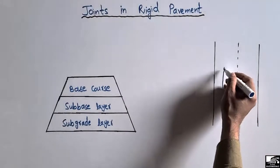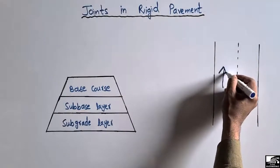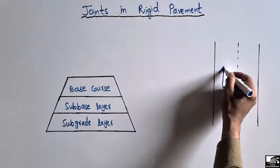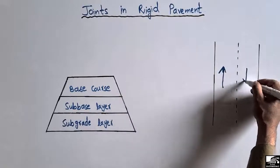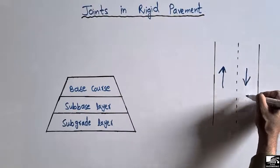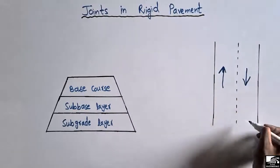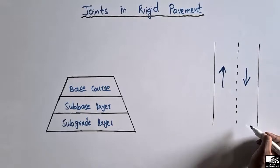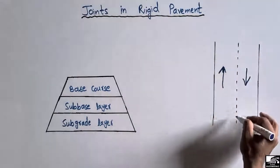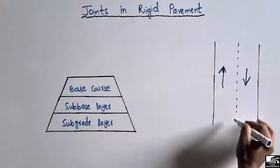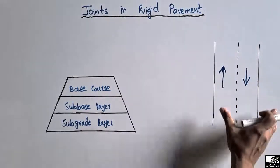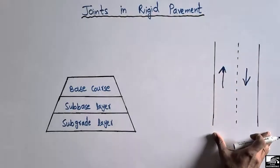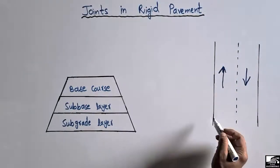Traffic moves in both directions — on one side the traffic moves in one direction while on the other side the traffic moves in the other direction. This is the center line of the road, and this is the longitudinal view of the rigid pavement.